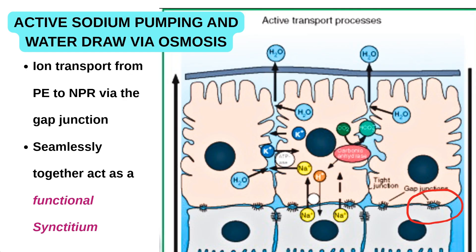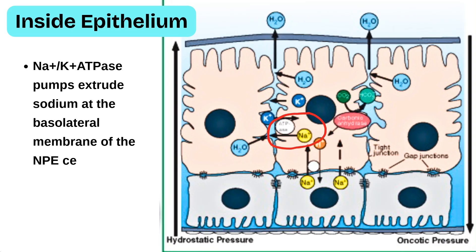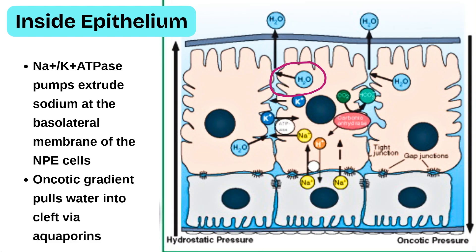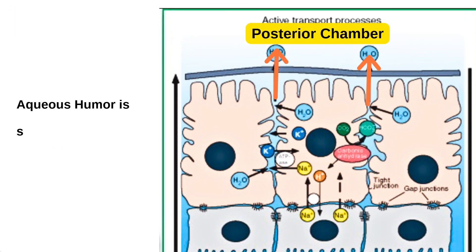Following this, sodium is actively pumped out by the sodium-potassium ATPase. This sodium exclusion creates an osmotic gradient that pulls water through aquaporins — water channels aquaporin-1 and aquaporin-4. These help in extrusion of water into the intercellular clefts, from where the aqueous humor flows into the posterior chamber.